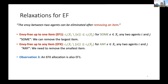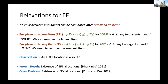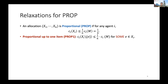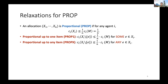An EFx allocation is also EF1. EF1 allocations exist and can be found easily; however, the existence of EFx allocations is still unknown, though there are approximations in the literature. We can use a similar approach to relax proportionality. Prop1 means every agent's cost excluding one item in xi is no greater than 1/n. The stronger definition, PropX, means every agent's cost is no greater than 1/n excluding any item within her bundle. A PropX allocation is also Prop1, so in this work we focus on PropX — if we prove existence for PropX, it implies existence of Prop1 as well.